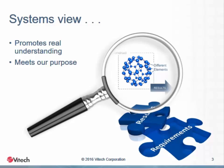The only way to have a clear understanding of the results that will be produced by a given design is to have a systems view of the design — one that provides a clear picture of the elements of the system and the ways in which they relate to produce those results. So taking a systems view of both the context and design systems is critical to the design process.